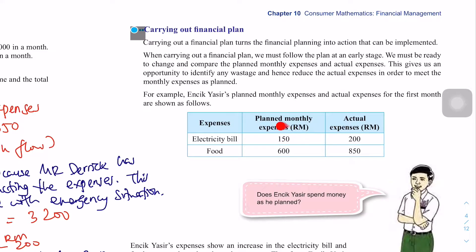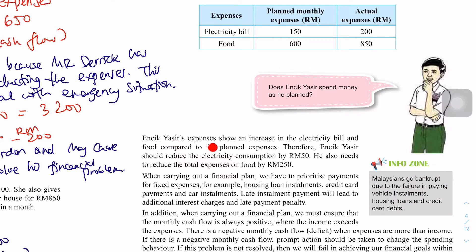Dia plan, dia nak bayar RM150 je untuk electricity. Tapi tengok-tengok, actual $200. Food pula, dia plan nak belanja RM600 saja. Tapi tengok-tengok, dia kena belanja RM850. Soalan dia: Does Encik Yaseh spend money as he planned? Salah. Tidak kan? Encik Yaseh's expenses show an increase in the electricity bill and food compared to the planned expenses. Therefore, Encik Yaseh should reduce the electricity consumption by RM50. He also needs to reduce the total expenses on food by RM250.